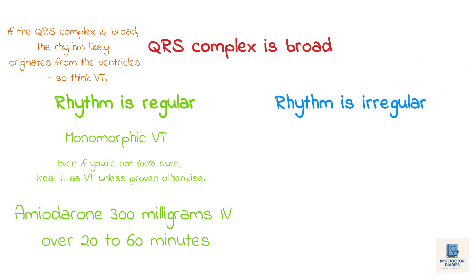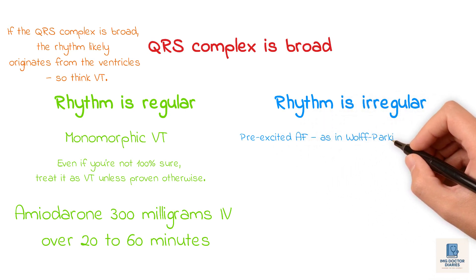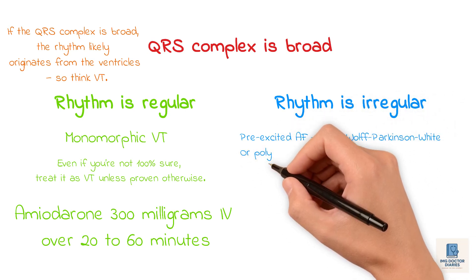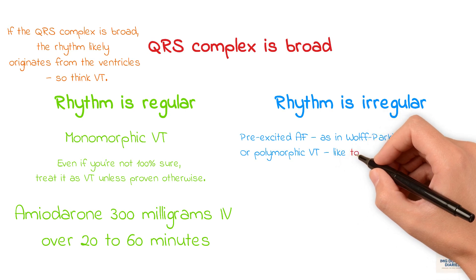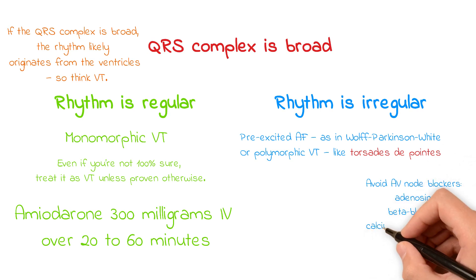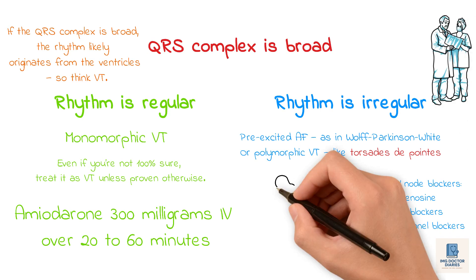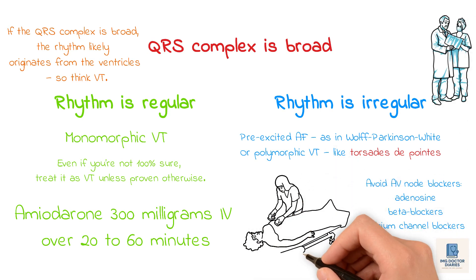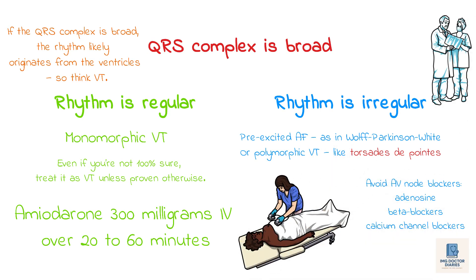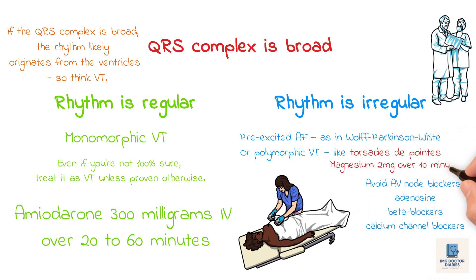If it's an irregular broad complex, possible causes include pre-excited AF — as in Wolff-Parkinson-White — or polymorphic VT like Torsades de Pointes. In these cases, avoid AV node blockers like adenosine, beta blockers, and calcium channel blockers. Instead, get expert help immediately. If the patient is deteriorating, prepare for defibrillation. For Torsades de Pointes, give magnesium 2 g IV over 10 minutes.